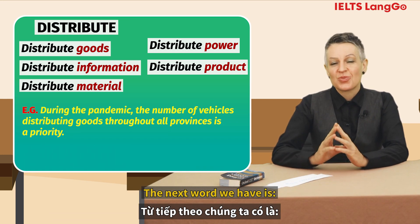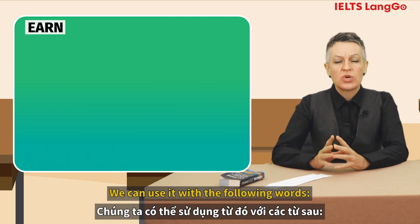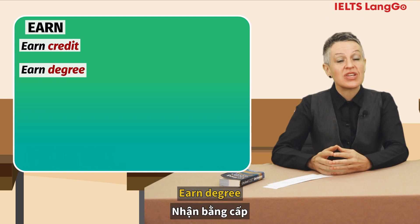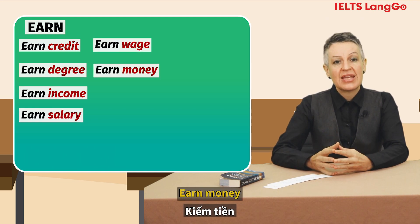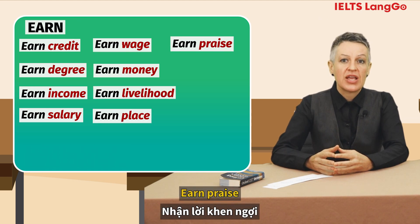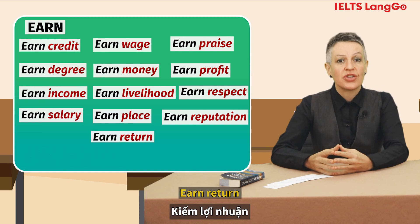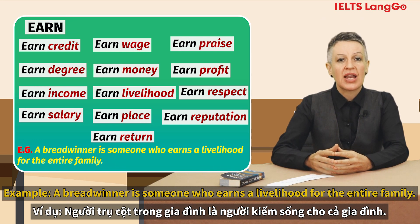The next word we have is 'earn'. We can use it with the following words: credit, degree, income, salary, wage, money, livelihood, place, praise, profit, reputation, respect, return. Example: a breadwinner is someone who earns a livelihood for the entire family.